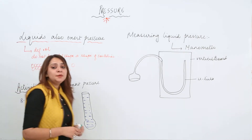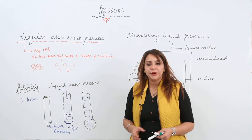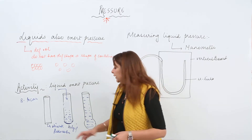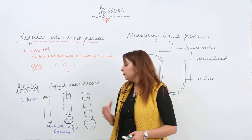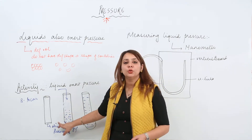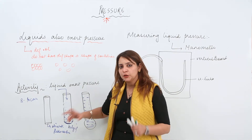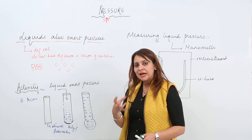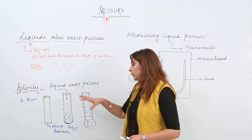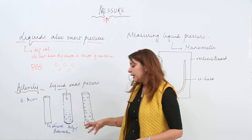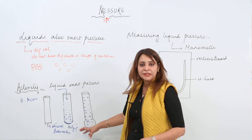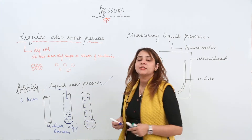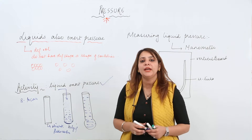The reason behind this bulging is liquid pressure. If the liquid did not exert pressure, it would not have bulged out. When there is no liquid, there is no bulging — it remains as a flat stretched membrane. But when we pour liquid, it starts bulging, and when we increase the volume of liquid, the bulging increases more. So through this activity you can actually prove that liquid exerts pressure.